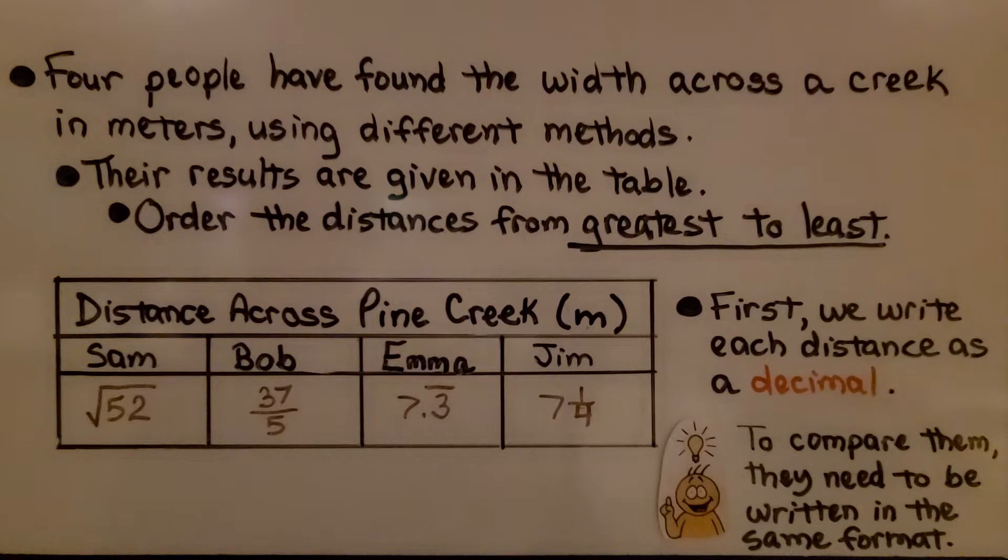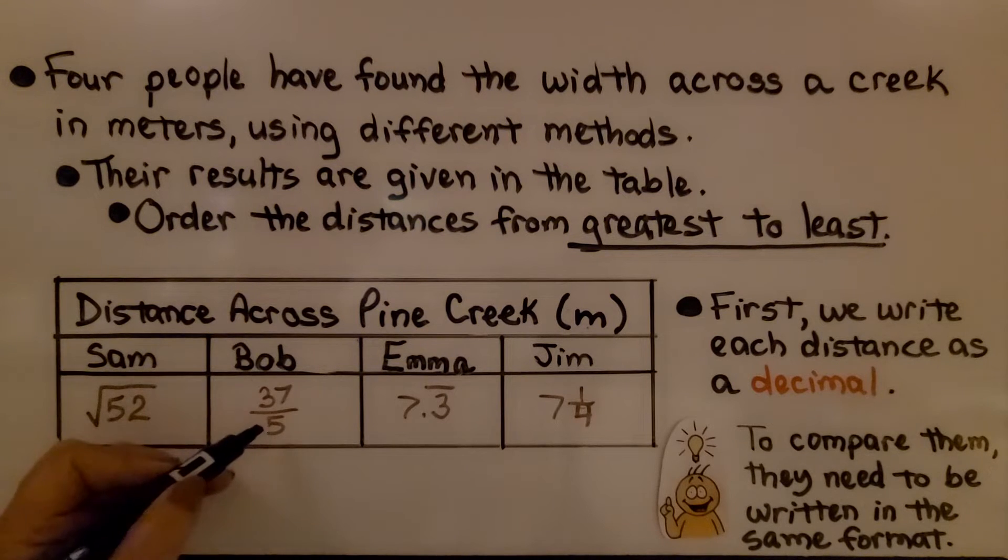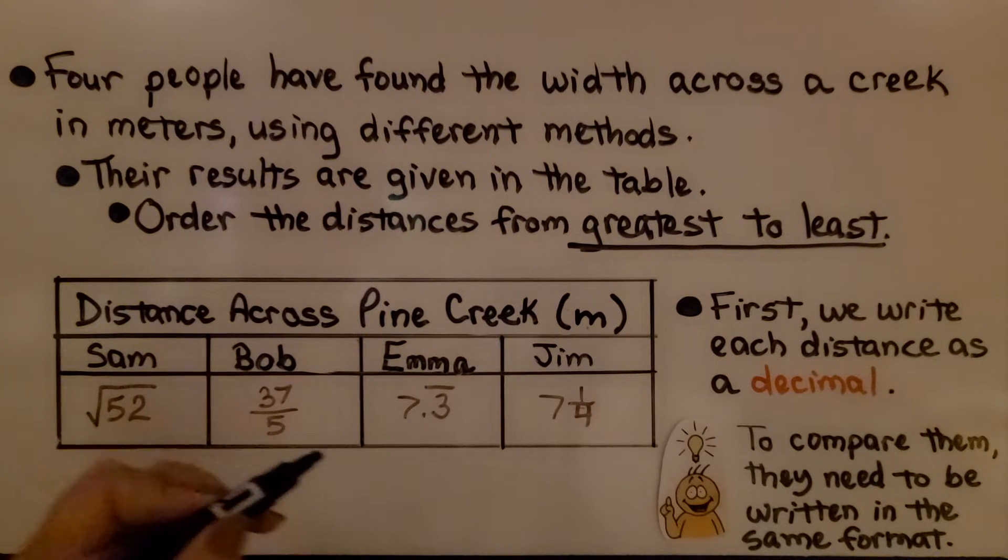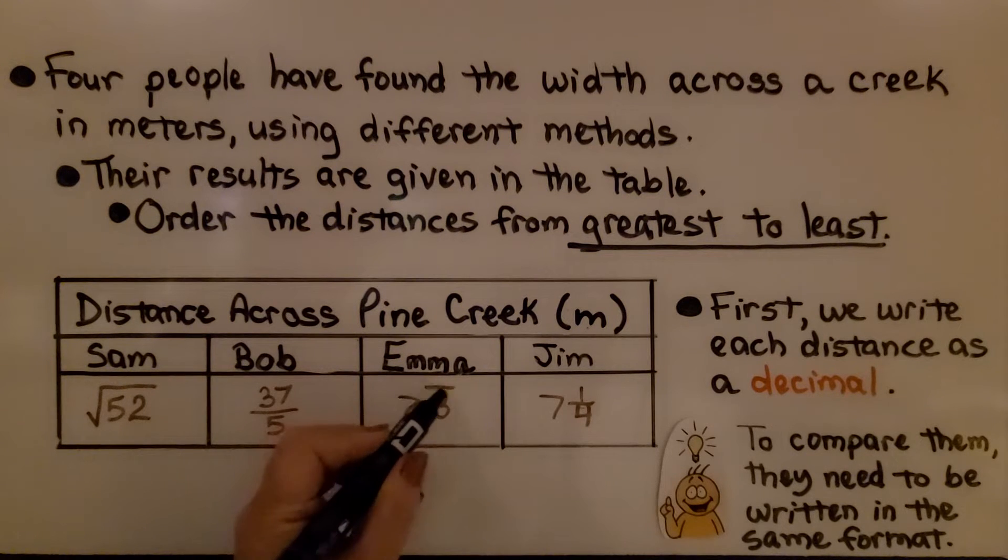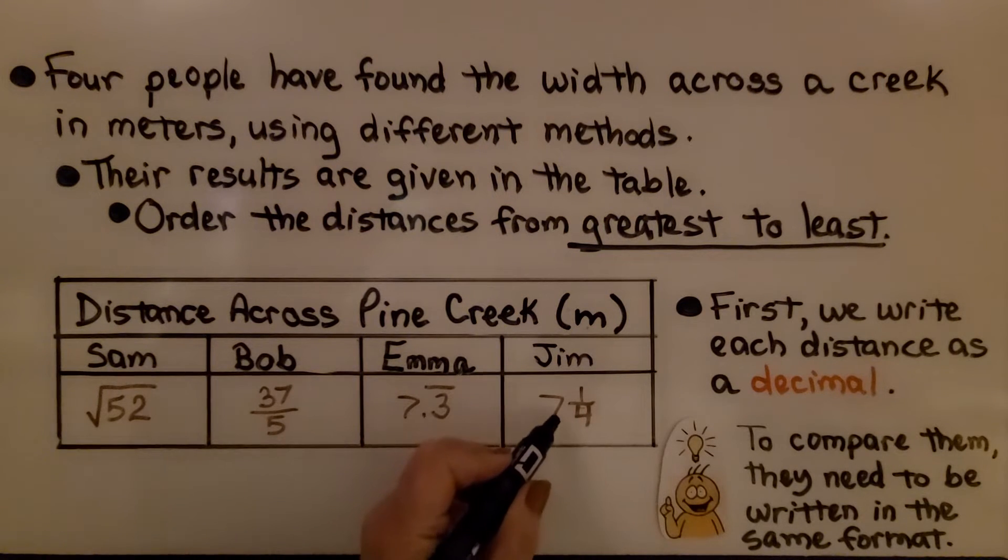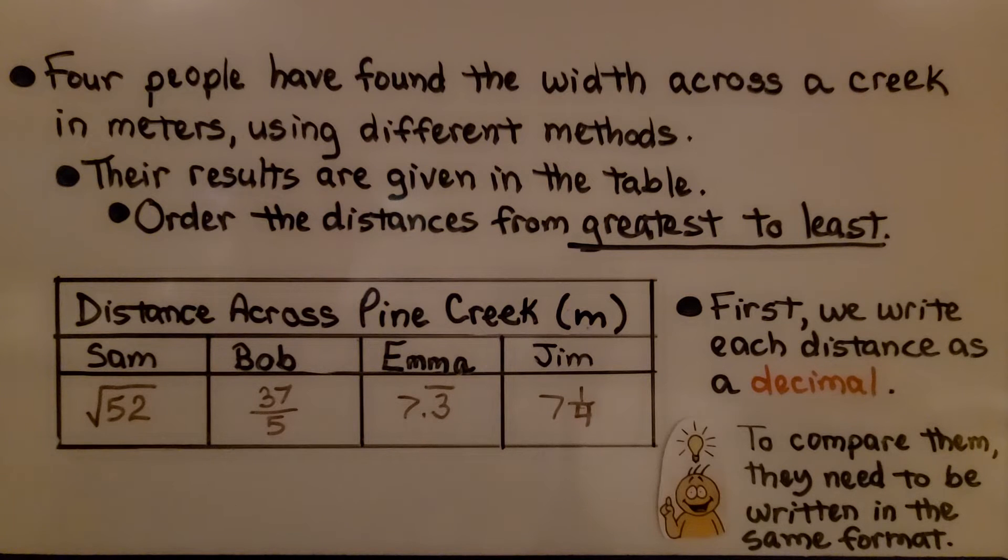We have Sam with square root of 52, Bob with 37 fifths, Emma is 7.3 repeating, and Jim is 7 and 1 fourth. We need to write all of these as decimals.